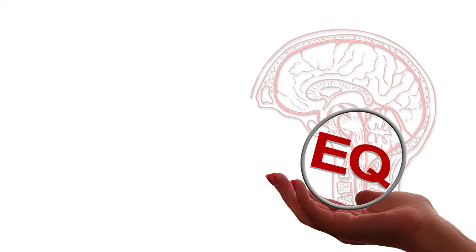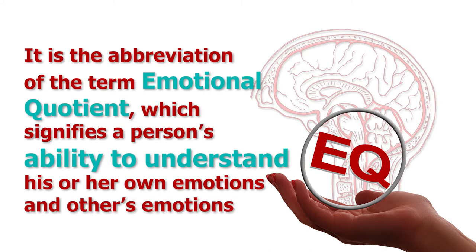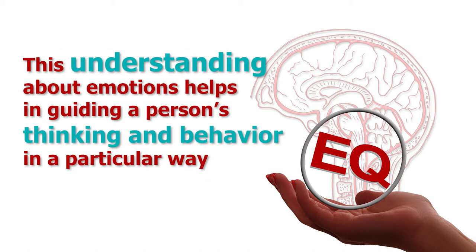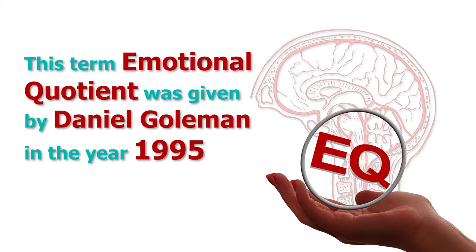The IQ score signifies a person's cognitive capacities like power of thinking, reasoning, and problem-solving abilities. This term IQ was given by William Stern. When we talk about EQ, it is the abbreviation of Emotional Quotient, which signifies a person's ability to understand his or her own emotions and others' emotions. This understanding helps in guiding a person's thinking and behavior.